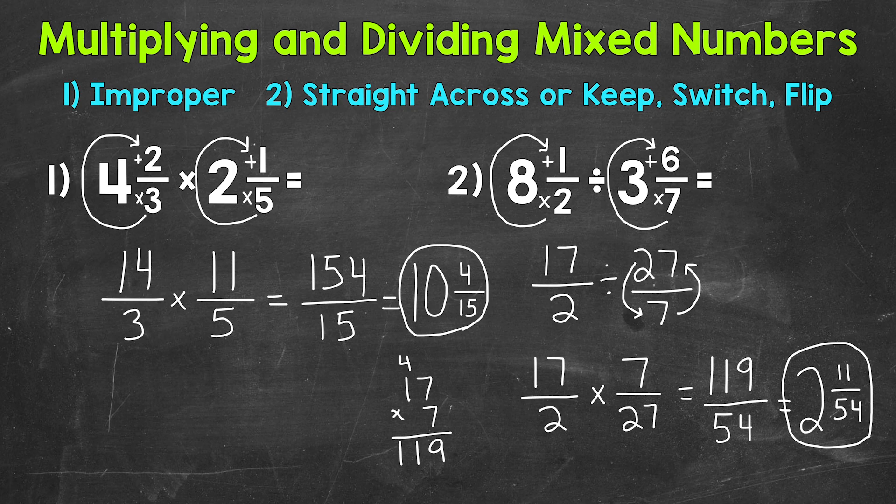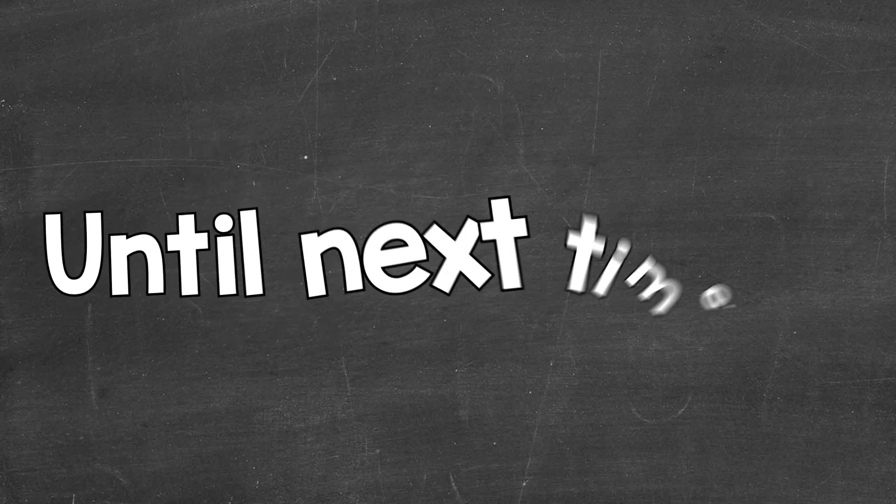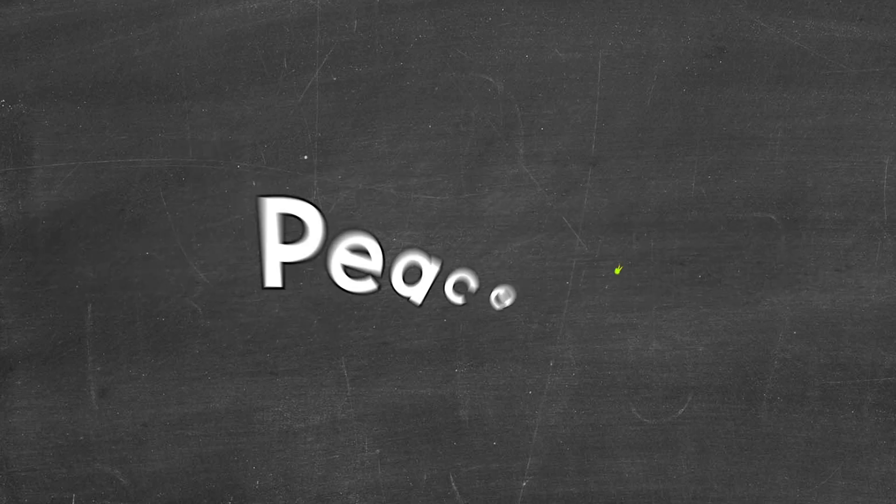So there you have it. That's how you multiply and divide mixed numbers. Convert everything to improper fractions, and then go through your steps for multiplying or dividing fractions. I hope that helped. Thanks so much for watching. Until next time. Peace.